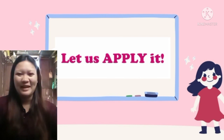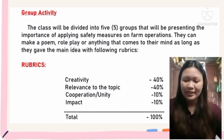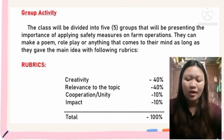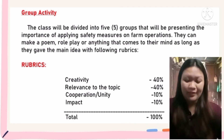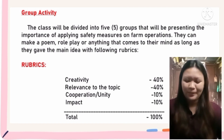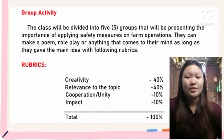Now let us apply it. We will be having a group activity. The class will be divided into five groups that will present the importance of applying safety measures in farm operations. They can make a poem, role play, or anything that comes to their mind, as long as they convey the main idea. The rubrics are: creativity 40%, relevance to the topic 40%, cooperation or unity 10%, and impact 10%, for a total of 100%.